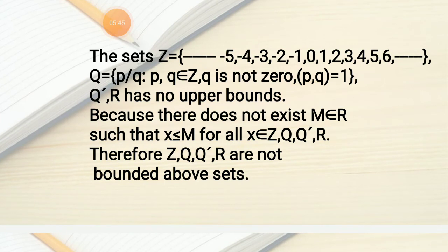The sets Z, Q = {p/q : p,q ∈ Z, q ≠ 0, gcd(p,q) = 1}, Q' (irrationals), and R do not have upper bounds, because there does not exist M ∈ R such that X ≤ M for all X ∈ Z, Q, Q', or R. Therefore Z, Q, Q', and R are not bounded above sets.